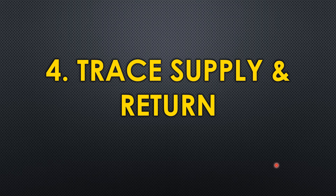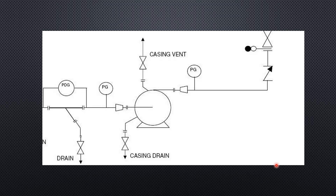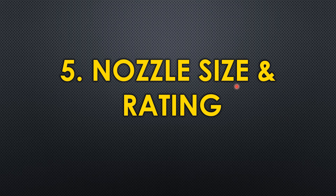The fourth parameter is tracing the supply and return of the piping — where it comes from and where it goes. You must understand this because only then can you plan the correct location for the pump. The distance from the supply source to the pump should be as short as possible for the pump to work efficiently. That is why tracing supply and discharge locations is essential.